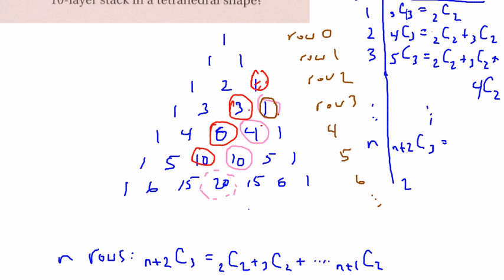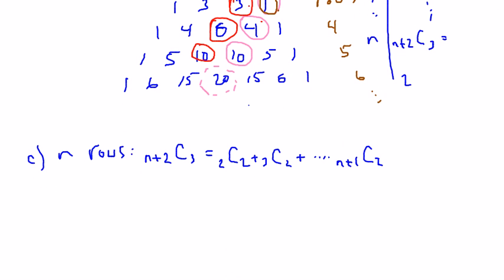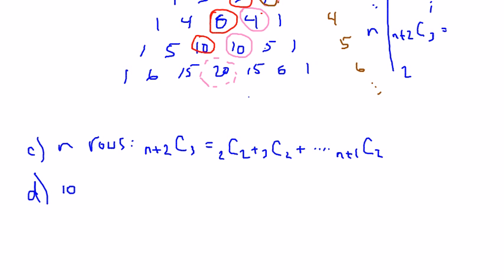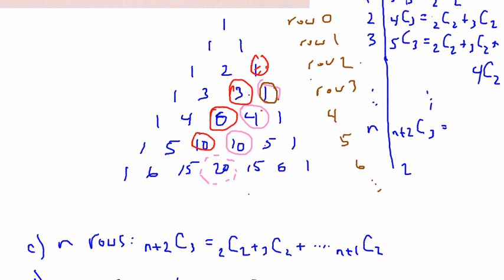Moving to question D: how many oranges are needed for a ten-layer stack in a tetrahedral shape? We've unlocked the pattern, so if n equals ten, we just find 12 choose 3, which equals 220. You can imagine adding the triangular numbers: one, three, six, ten, fifteen, et cetera — and eventually they add up to 220.